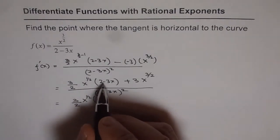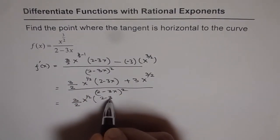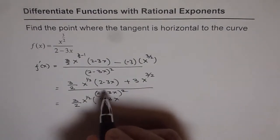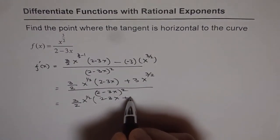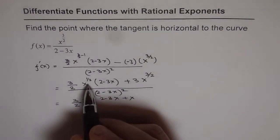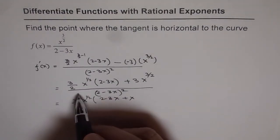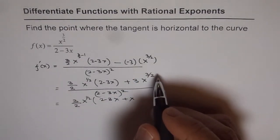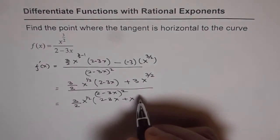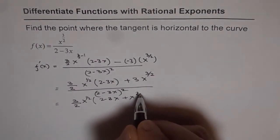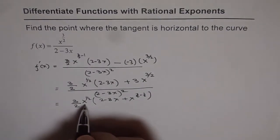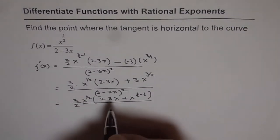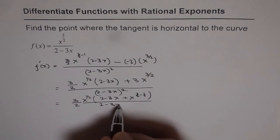Inside the bracket we get 2 minus 3x and then plus 3. When we take x to the power of half as a common factor, the exponent reduces: 3 over 2 minus half equals 1. So the remaining x term becomes x to the power of 1, and the 2 moves into the denominator, giving us 2 minus 3x whole square.